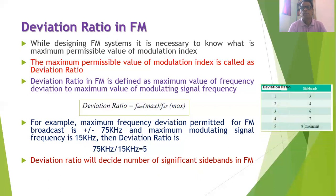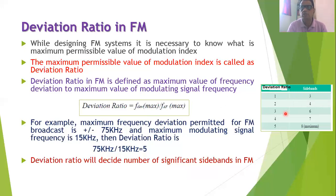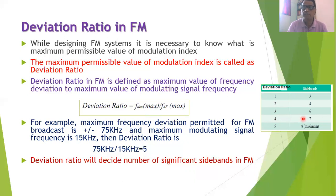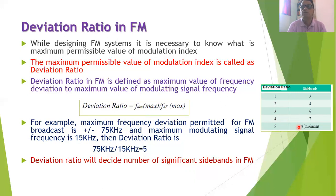If the deviation ratio is 1, the number of significant sidebands is 3. If it is 2, there are 4 significant sidebands. If it is 3, there are 6. If it is 4, there are 7. The highest value of deviation ratio is 5, giving 8 significant sidebands, which is the maximum number of significant sidebands in FM.